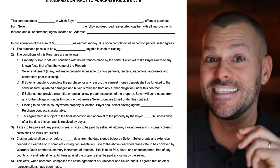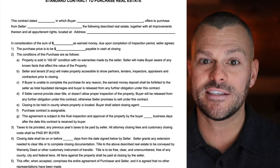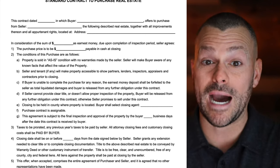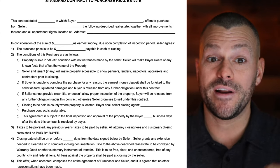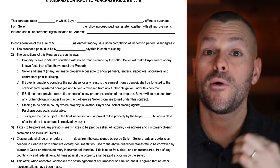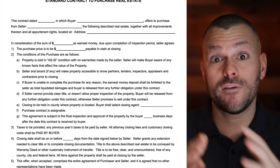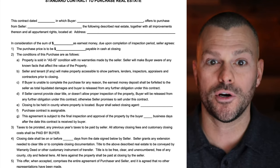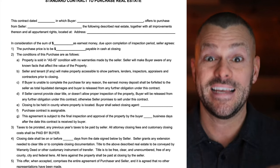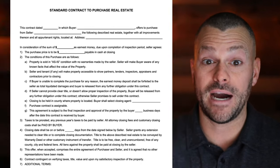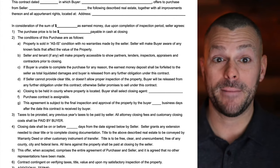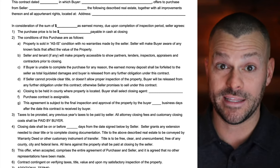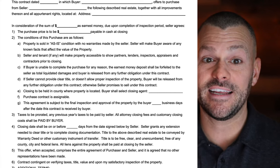Condition A: property is going to be sold in as-is condition with no warranties made by the seller. The seller will make the buyer aware of any known facts that affect the value of the property. We are not asking the seller to warranty the property, but we are asking them to let us know of any issues so we can do our due diligence and determine if this is a property we want to move forward on. Condition B: the seller and tenant, if any — because sometimes properties will be occupied when we get them under contract.